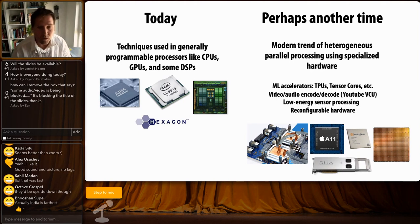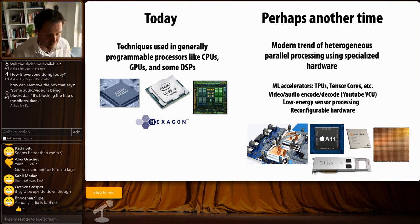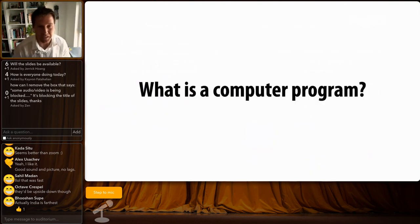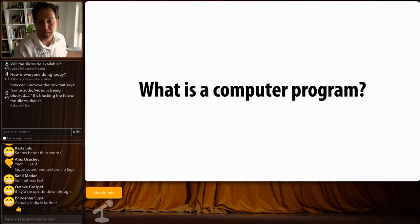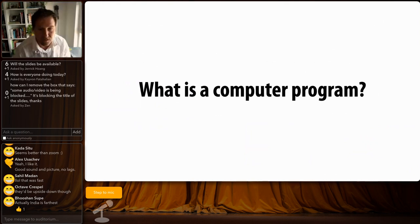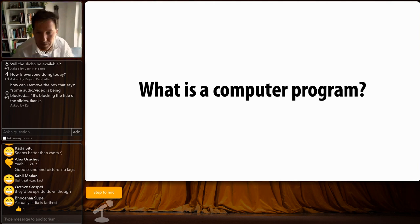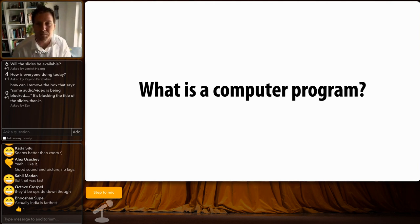One of the biggest trends in computing right now is the shift away from these types of processors to more specialized accelerators, like machine learning accelerators, graphics processors, or audio and video - but we're not going to talk about that today. Over the next hour, we're probably going to go from the simplest question about computing to some topics typically introduced in graduate-level computing courses. So let's get started.